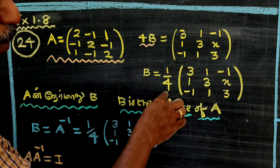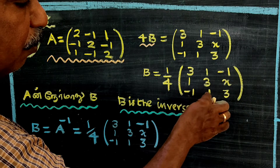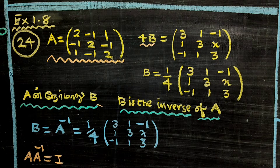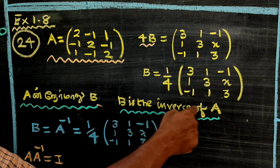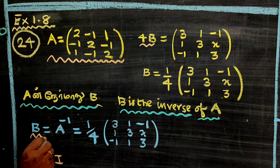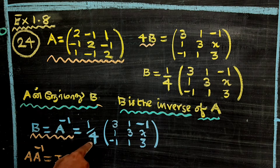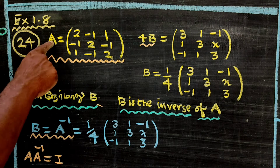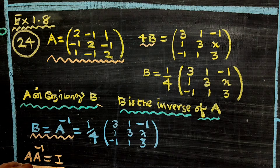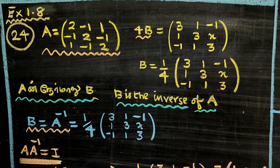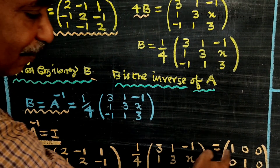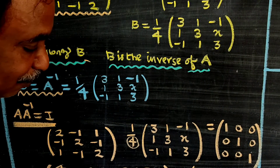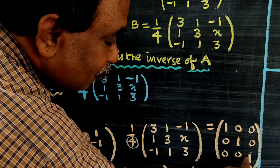Then B is equal to 1/4 times the matrix: 3, 1, -1, 1, 3x, -1, 1, 3. Since B is the inverse of A, B equals A inverse. Therefore A times A inverse equals I. The denominator is 4, so 4 times I gives 4, 0, 0, 0, 4, 0, 0, 0, 4.